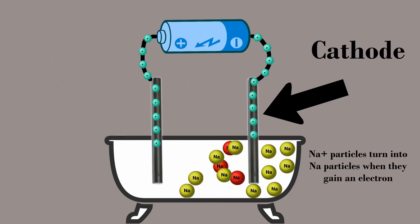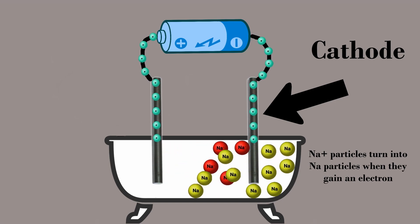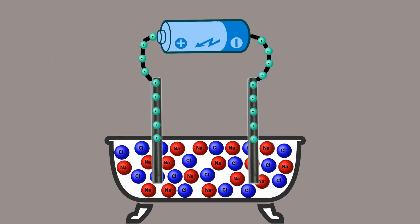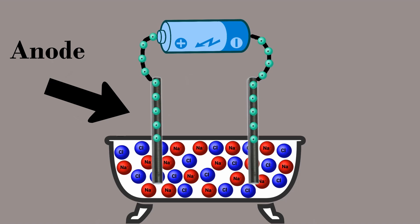The negatively charged cathode attracts the sodium cations. At the same time, the battery takes electrons from the other metal rod, called the anode, making it positively charged.